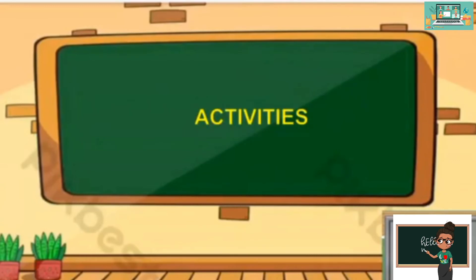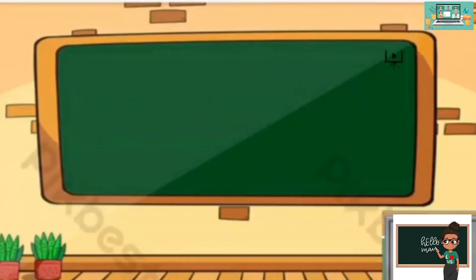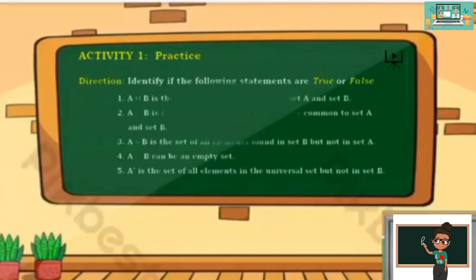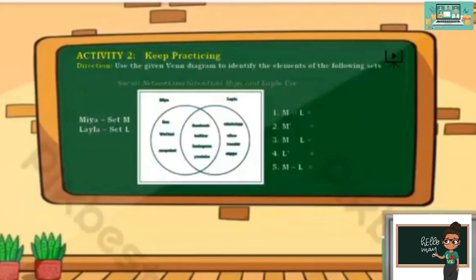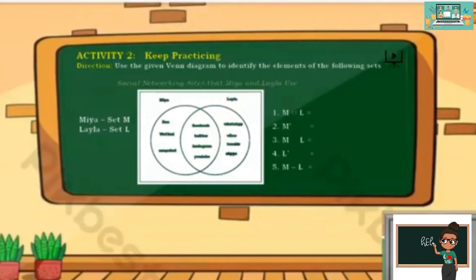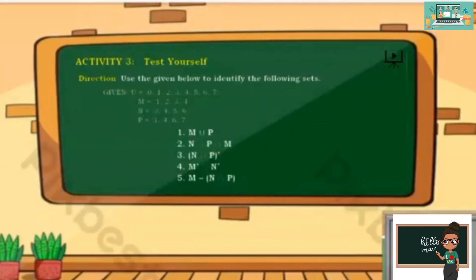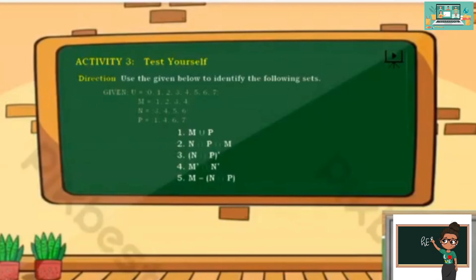For your activities, kindly refer to the given module. For activity 1, you have the practice — identify if the following statements are true or false. For activity 2, keep practicing — use the given Venn diagram to identify the elements of the following set. For activity 3, test yourself — use the given information below to identify the following sets.